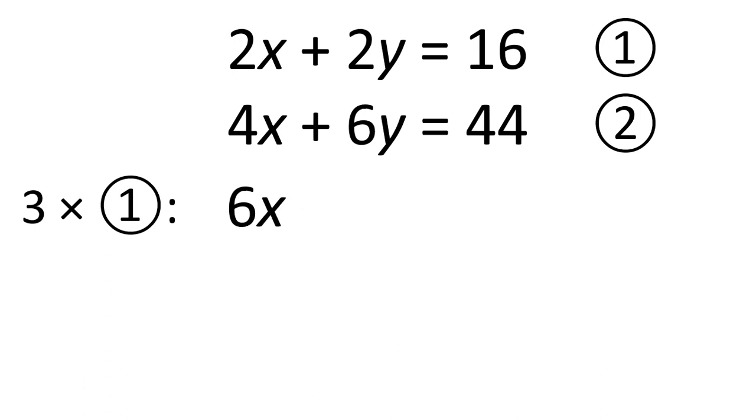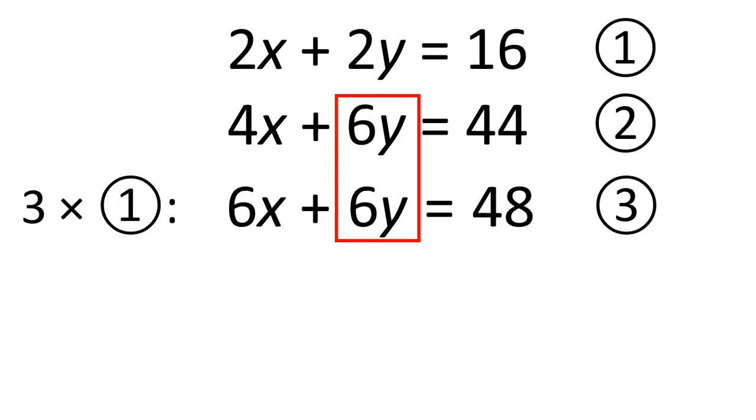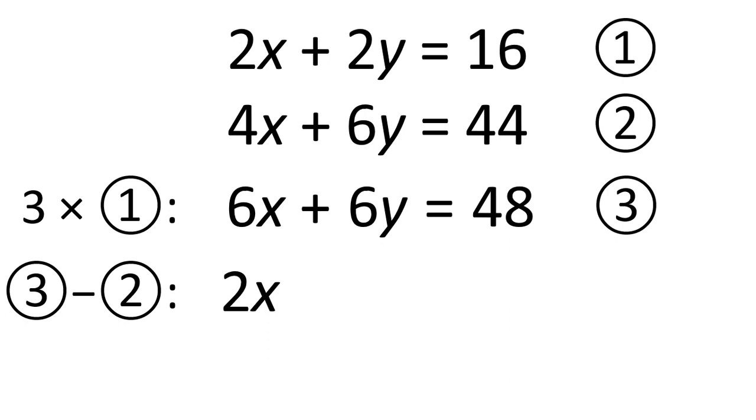That would give us 6x plus 6y equals 48, which we'll label equation 3. Now we've managed to get the y's to be the same as each other. So this time we'll do equation 3 take away equation 2. Equation 3 has 6x, take away the 4x from equation 2, we're left with 2x. 6y take away 6y gives us 0y. 48 take away 44 is 4, so x equals 2.